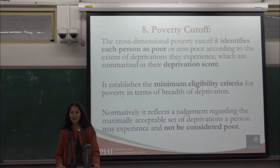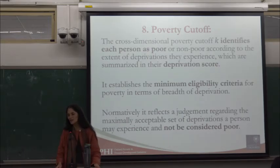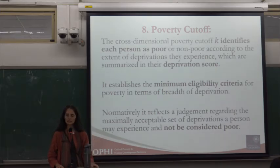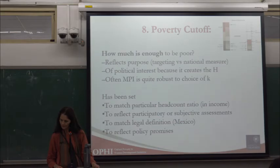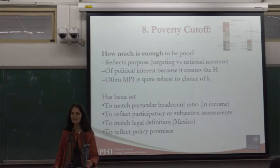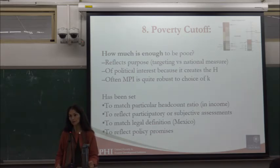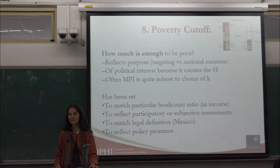Moving quickly to the poverty cutoff: the poverty cutoff — one-third for the global MPI — is fixed across deprivation scores. If your deprivation score equals or exceeds the poverty cutoff, you are poor. How is it set in practice for national MPIs? One approach: if you already have an income poverty measure and want your multidimensional measure's head count ratio to match. That was done in Bhutan, which had a poverty rate of 26% and asked that their MPI head count ratio also be 26%.